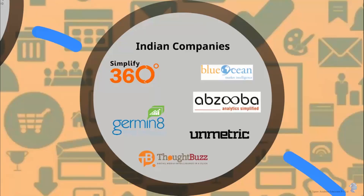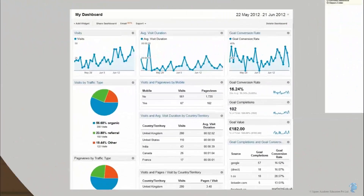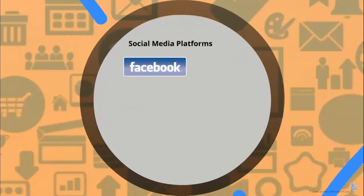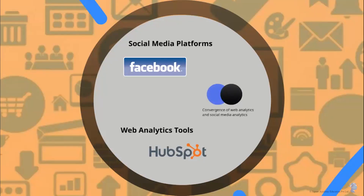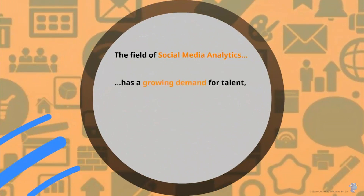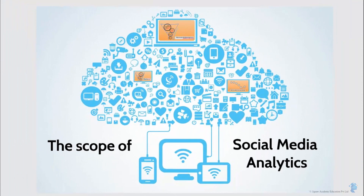Google is a name synonymous with anything to do with the internet, and Google Analytics from 2012 started providing data from social media as well. Social media platforms like Facebook provide detailed reports in their insights section, and popular web analytics tools like HubSpot have also started providing social media data. We are seeing a convergence of web analytics and social media analytics, and sometime in the future there may not be a clear distinction between the two. This space is continuing to reinvent itself, there is demand for many professionals, and it is only going to grow.